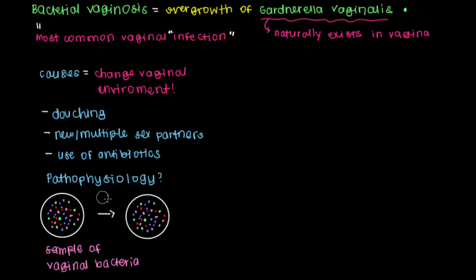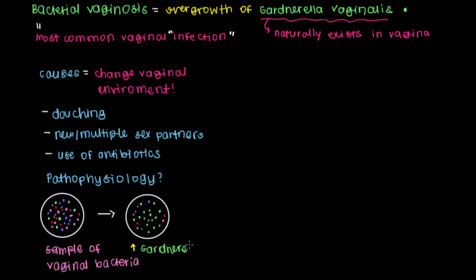Let's say our patient has recently been treated for a throat infection and is taking an antibiotic. What happens is that antibiotic kills off some of the bacteria that exist in the vagina as well as elsewhere in the body. As you can see, the majority of bacteria that now exist are the Gardnerella vaginalis bacteria. They'll reproduce and overgrow, and the key is that this increase in the population of Gardnerella vaginalis leads to your symptoms.